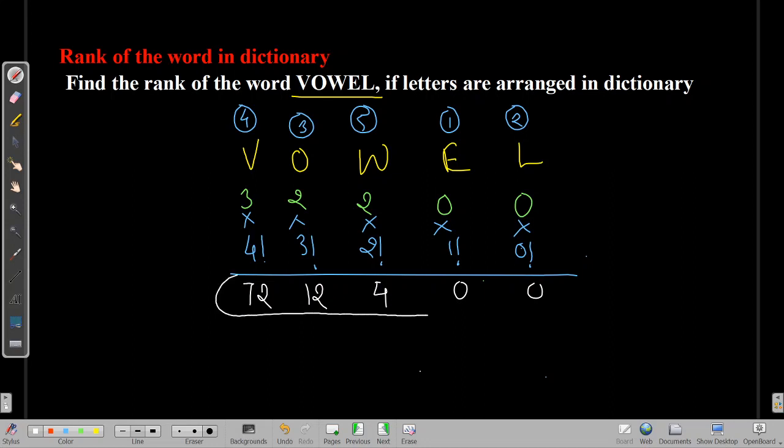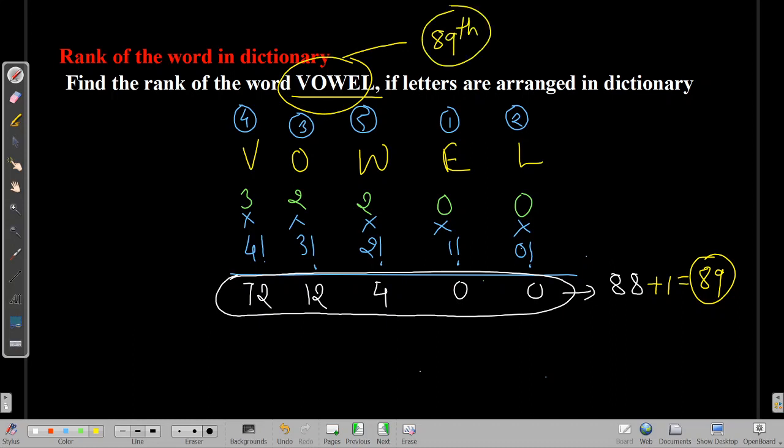So just add these numbers. So your addition will be 88. 72, 12, and 4. So the addition is 88. So there are 88 words below the vowel. Then what will be the rank of the vowel? Plus 1. Here you go. 89th. So vowel's rank will be the 89th word. When the letters are arranged in dictionary manner, vowel's rank will be 89th rank.